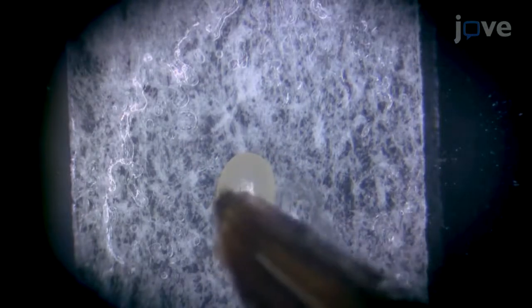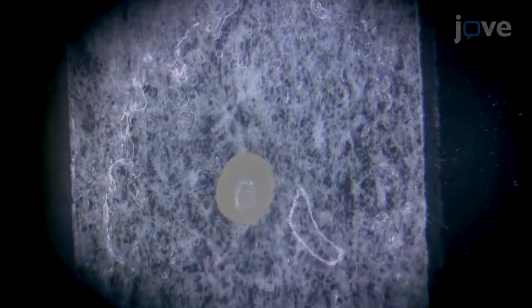Align the eggs on the double-sided tape using a wet paintbrush, keeping a two-millimeter distance between the eggs. All eggs should be oriented so that the longitudinal axis is properly aligned.